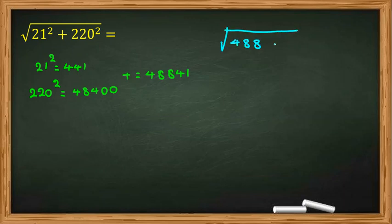So it will be 48841. And here you consider digits, divide digits 2 by 2 from right.